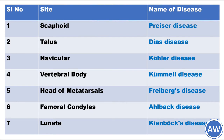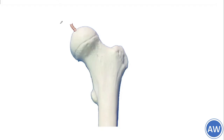To understand a little bit more about how avascular necrosis occurs, let us talk about the avascular necrosis of the head of the femur. A unique feature about the head of the femur is that it has a ligament called the ligament of the head of the femur, or ligamentum teres femoris.